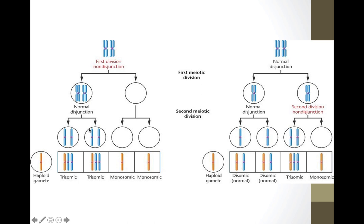If non-disjunction occurs in meiosis 2, you start with the normal first division giving 2n, and then non-disjunction in the second division results in 50% normal cells, 25% monosomic, and 25% trisomic gametes.